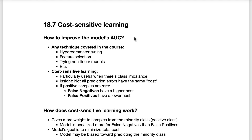Now that we know our next step is to improve our model's AUC, how do we actually do that? The good news is that we can use any technique covered in the course, such as hyperparameter tuning, feature selection, trying non-linear models, and so on. All of those techniques have the potential to improve the model's AUC.